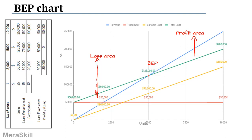If I draw a vertical line at the current sales level, any sales above the break-even point up to that line represent the margin of safety. The BEP is where the lines intersect, and everything above that is the margin of safety.